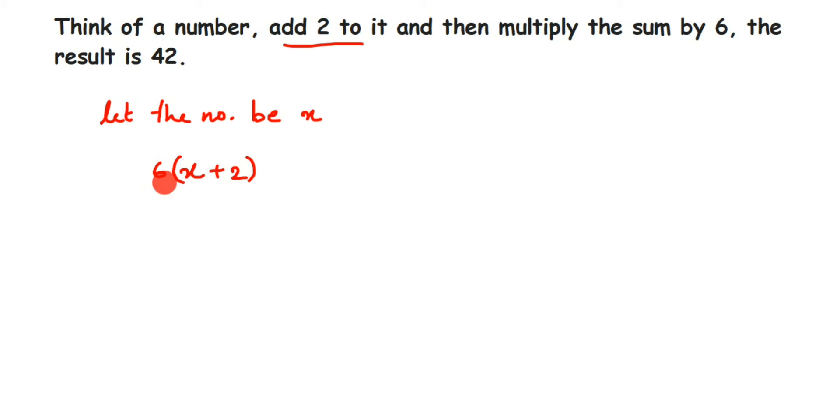So here we got the equation. We have to find out the value of x, so we're going to open the bracket. Open the bracket means multiply 6 with x and multiply 6 with 2. So 6 into x is 6x, and 6 times 2 is 12, is equal to 42.